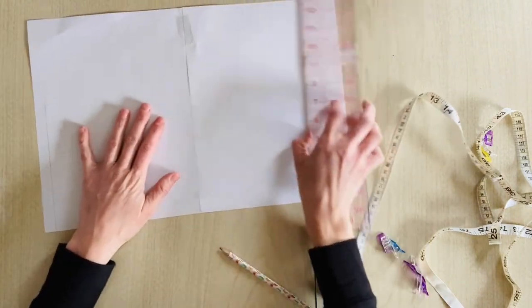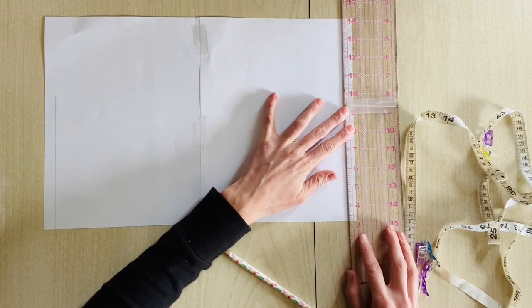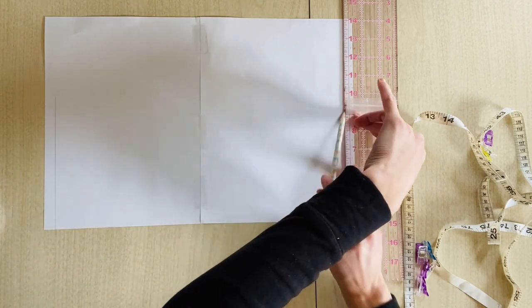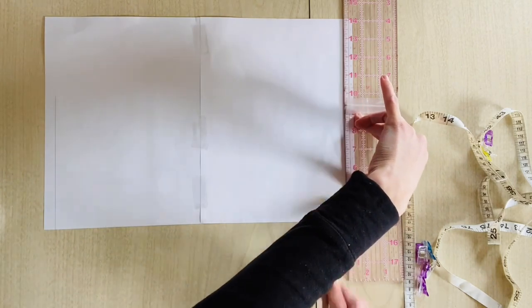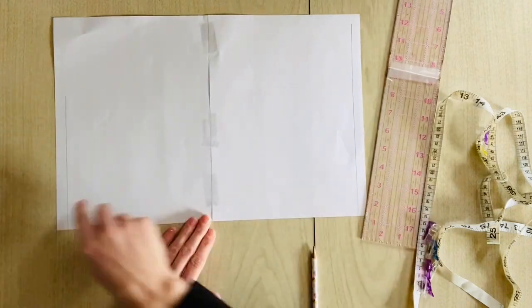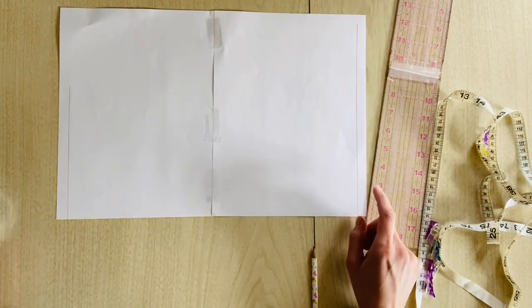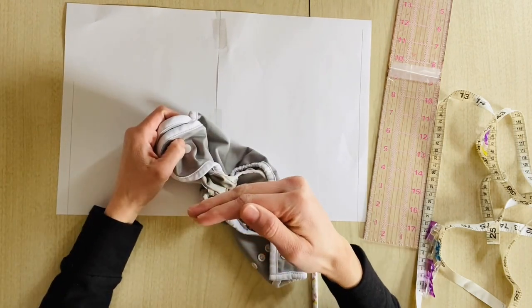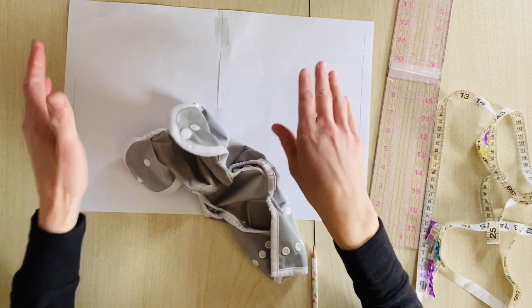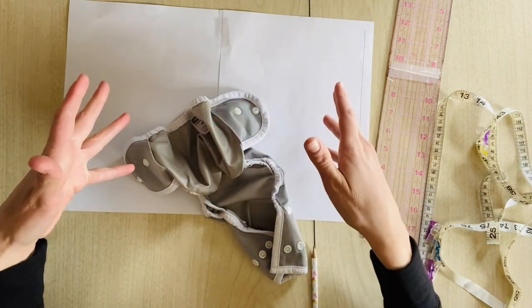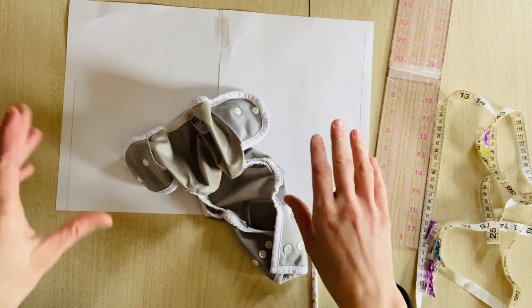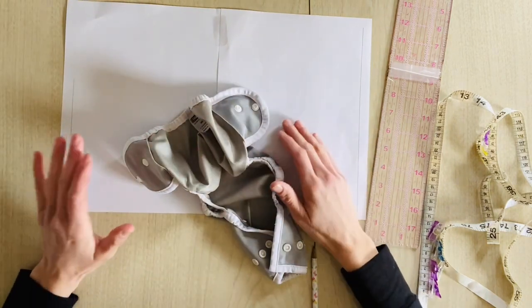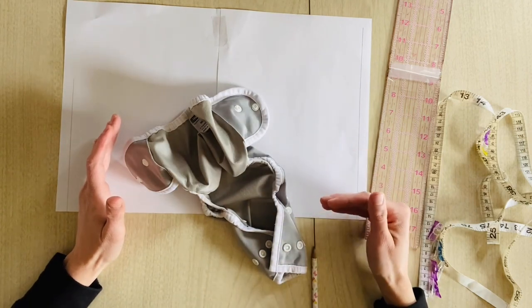And then we'll draw a longer line here at the top. And then of course this is the rise of my item. Now, so with patterns you always do the half pattern so that way when you cut out something it's going to be symmetrical on both sides. Because the last thing you want is to have your product be different shapes on both sides.